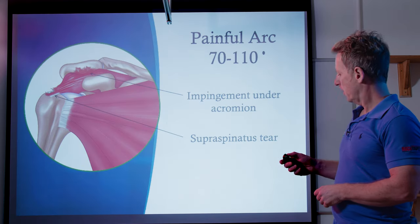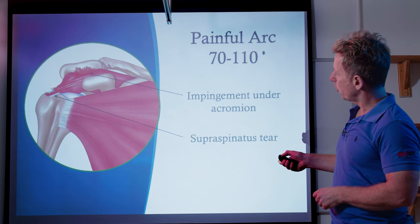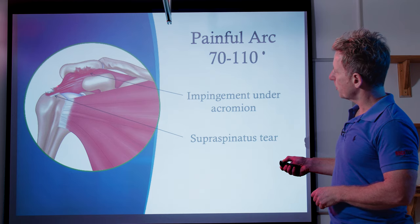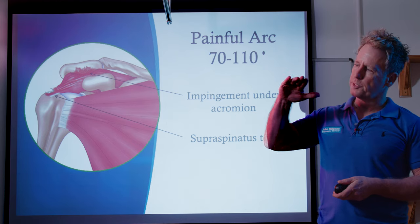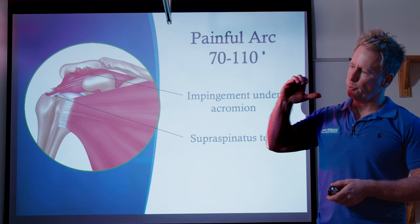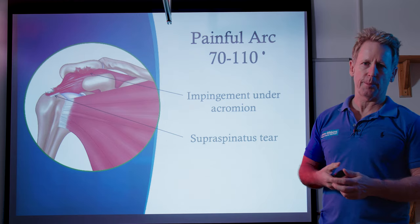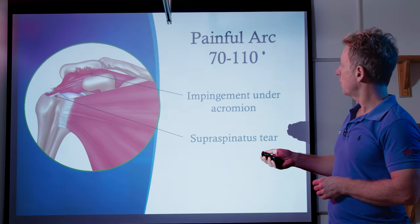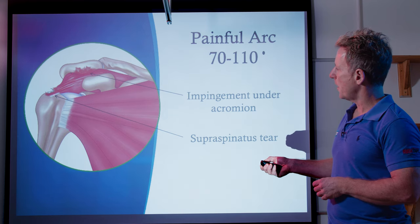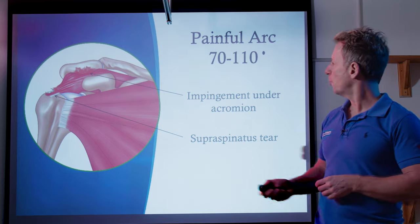Painful arc at 70 to 110 degrees is impingement under the acromion. The space between the acromion and the top of the greater tubercle is around one centimetre — 8 to 12 millimetres, with 10 millimetres being normal. The acromion is usually flat, but sometimes it can be slightly curved or hooked — they call it type one or type two. If there is less space, it could impinge the subacromial bursa, cause a tear of the bursa, or even a tear of the supraspinatus, all of which can restrict motion within the painful arc.